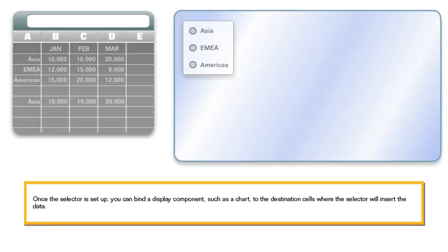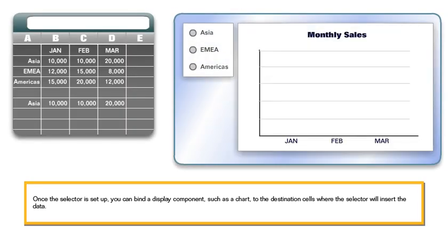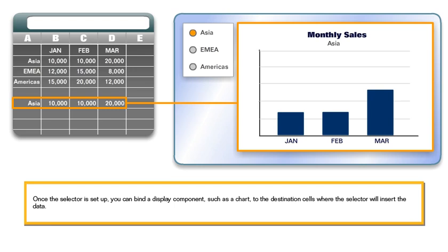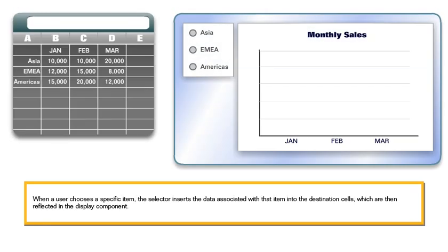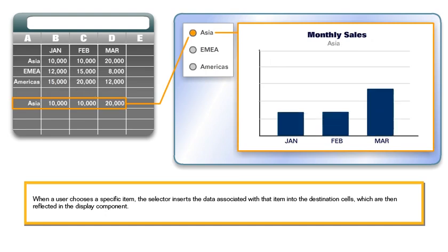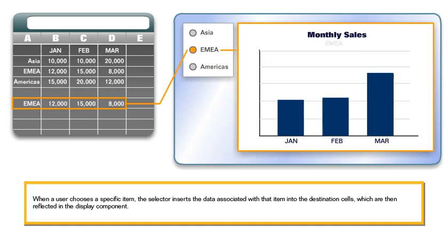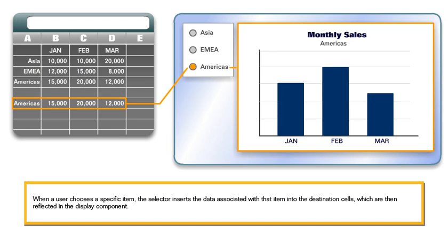Once the selector is set up, you can bind a display component, such as a chart, to the destination cells where the selector will insert the data. When a user chooses a specific item, the selector inserts the data associated with that item into the destination cells, which are then reflected in the display component.